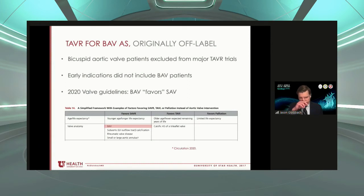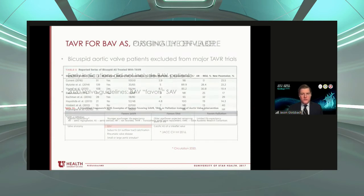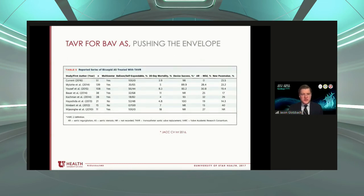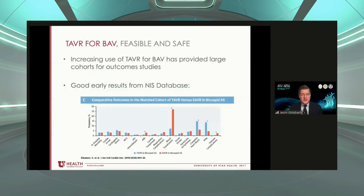Even in the most recent guidelines published this week by the AHA in Circulation, bicuspid aortic valve is said to favor surgical aortic valve replacement — but that's a nebulous term. The reality in 2020 is that TAVR is being performed quite commonly for bicuspid aortic valves. Several recent case series have been published looking at bicuspid aortic valve patients with aortic stenosis treated with TAVR. This is clearly being done — we do this quite often at our center — and TAVR for bicuspid valve is a reasonable option.